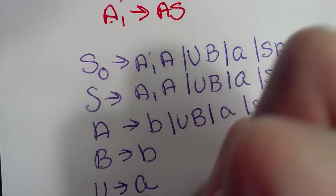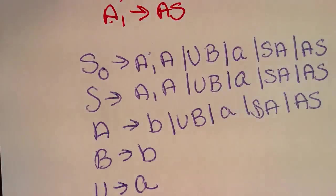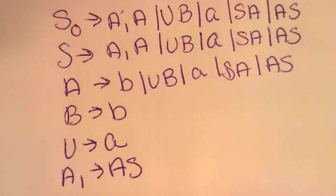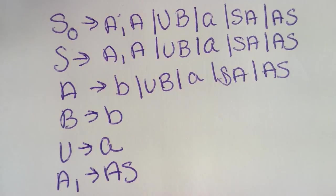U points to A and A1 points to AS. So now this is our final answer. And now the context free grammar is Chomsky normal form.